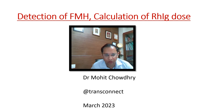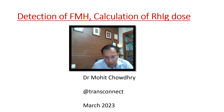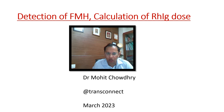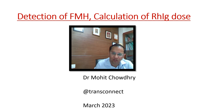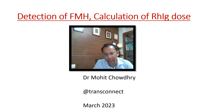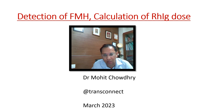Hello everyone. In the last topic we covered Rh immunoglobulin, the routine anti-D prophylaxis, and fetomaternal haemorrhage. In this episode we will be calculating the dose of RhIg, the methods to detect fetomaternal haemorrhage, which test to employ, when to do flow cytometry, when to do a rosette test, or when to do a quantitative test like the KB test. I am Dr. Mohit Chaudhary.